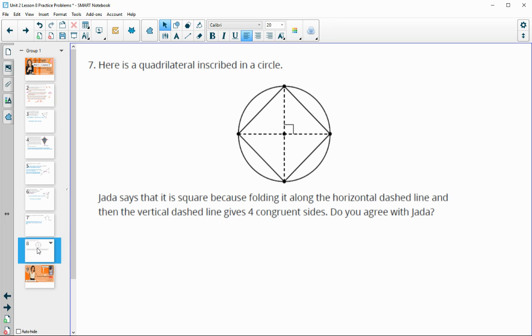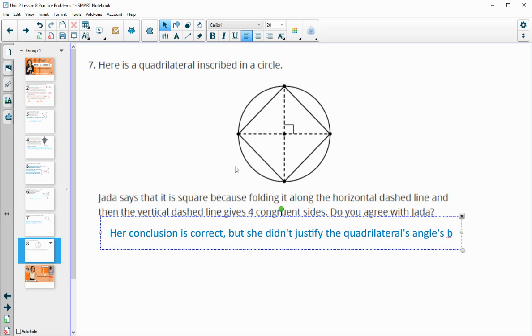All right. Then we have this quadrilateral inscribed in a circle. Jada says that it is a square because folding it along the horizontal dashed line and the vertical dashed line gives us four congruent sides. Do you agree with Jada? So it is a square, but she's kind of lacking a little bit in the explanation because she only got us four congruent sides. We also have to talk about these angles being right angles. So her conclusion is correct, but she didn't justify the quadrilaterals angles being 90 degrees.